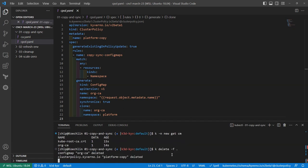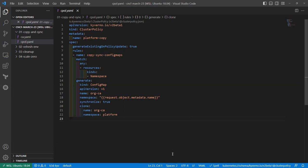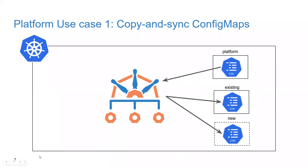Now let's create a new namespace called 'new'. We'll get config maps in this namespace, and Kyverno should detect that new namespace and clone the config map into it. Indeed, we see that 'org-ca' has been generated into the new namespace. This works with any resource — not just config maps. Platform teams can take advantage of this for config maps, secrets, and other namespaced resources that should be present across the cluster. You can also narrow scope with labels or other criteria.